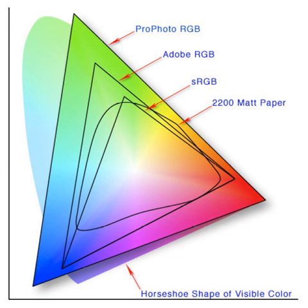YIQ was formerly used in NTSC television broadcasts for historical reasons. This system stores a luma value roughly analogous to, and sometimes incorrectly identified as luminance, along with two chroma values as approximate representations of the relative amounts of blue and red in the color.